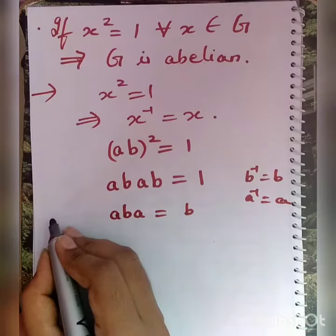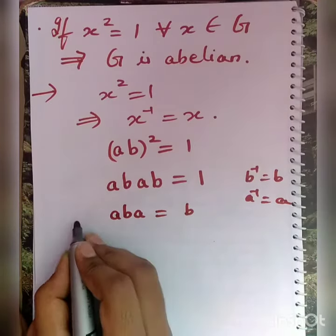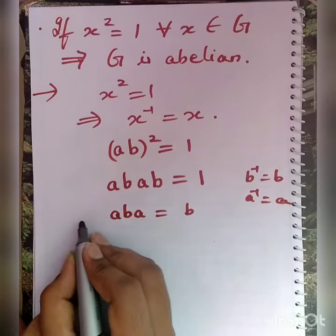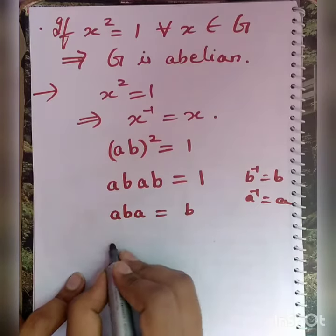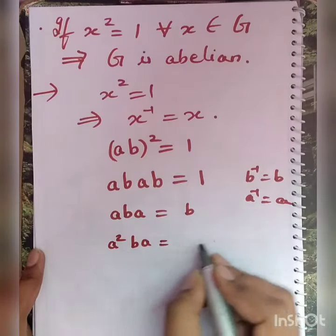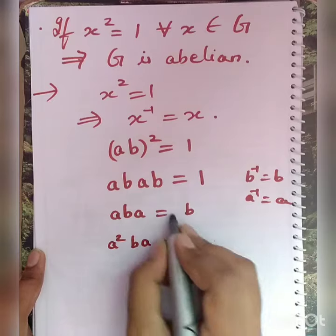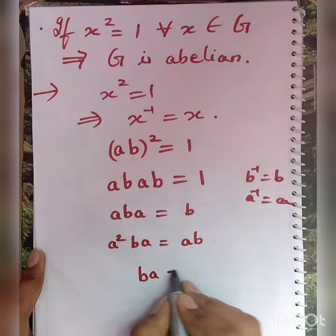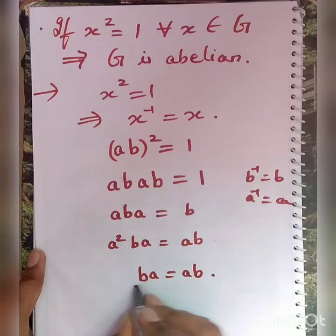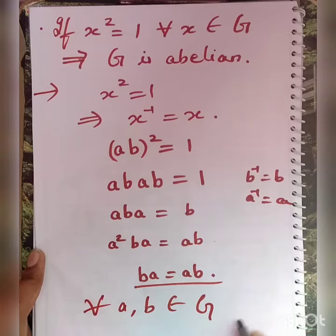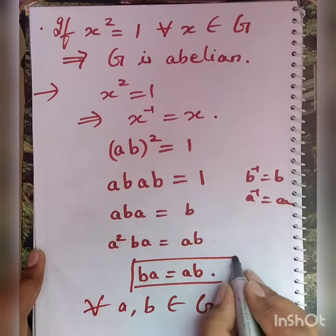Now multiply this equation by a on the left. We get a²ba = ab·a, which implies ba = ab. Hence, for all a, b in G, we have ab = ba.